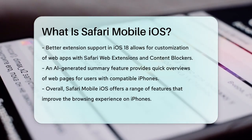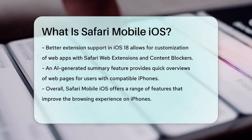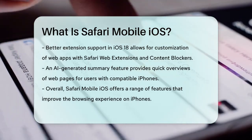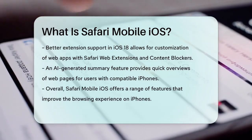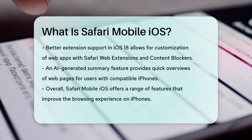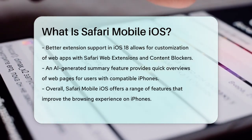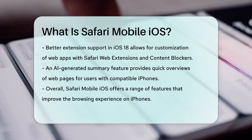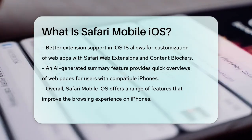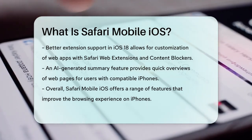Additionally, iOS 18 introduces an AI-generated summary feature. If you have a newer iPhone with Apple Intelligence enabled, you can get summaries of web pages directly in Safari. This feature is accessed through the reader view and can be very handy for quickly understanding the main points of an article.